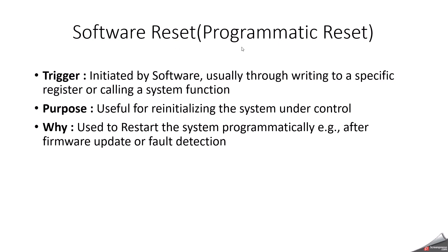Software reset, also called programmatic reset, occurs when a specific command or sequence of commands within the software intentionally triggers a reset. This is typically used when a critical error is detected or when the software needs to re-initialize the system without any external trigger. The main purpose is re-initializing the system in a controlled manner, and it is used to restart the system programmatically — for example, after a firmware update or fault detection.